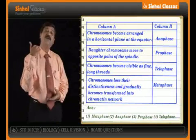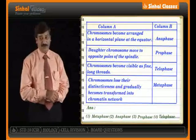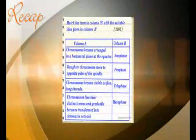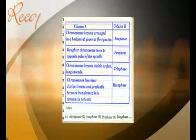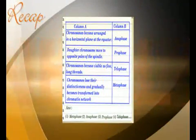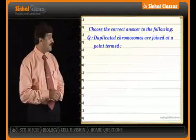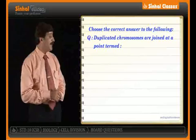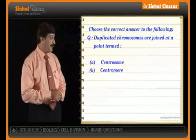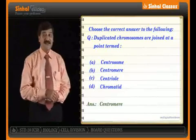So read the sentences properly. Try to recall what you have already studied and then answer such questions. There is one more question that featured in the same year, 2002. Choose the correct answer to the following: duplicated chromosomes are joined at a point termed as — centrosome, centromere, centriole, or chromatid. The answer is centromere.